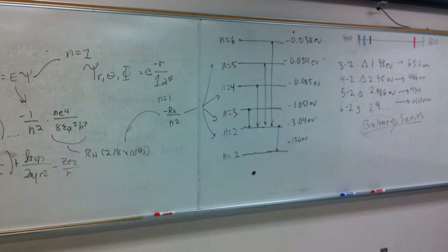The 3 to 2 transition is going to be at about 656 nanometers, the n equals 4 to 2 is going to be around 480–490 nanometers, the 5 to 2 is going to be even smaller, and the 6 to 2 is going to be about 410 nanometers. So we should expect a red light to be given off, and then some blue light — and collectively, that will be kind of a purplish-violet color.